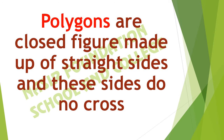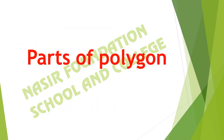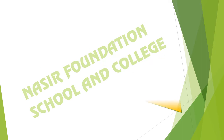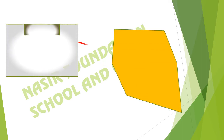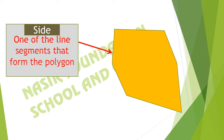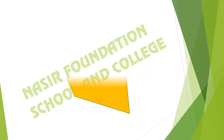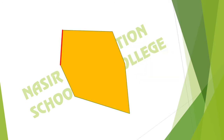These sides do not cross. Parts of a polygon: as we can see, different straight lines are joining with each other. This is called the side of this polygon. One of the line segments that form the polygon is called its side.